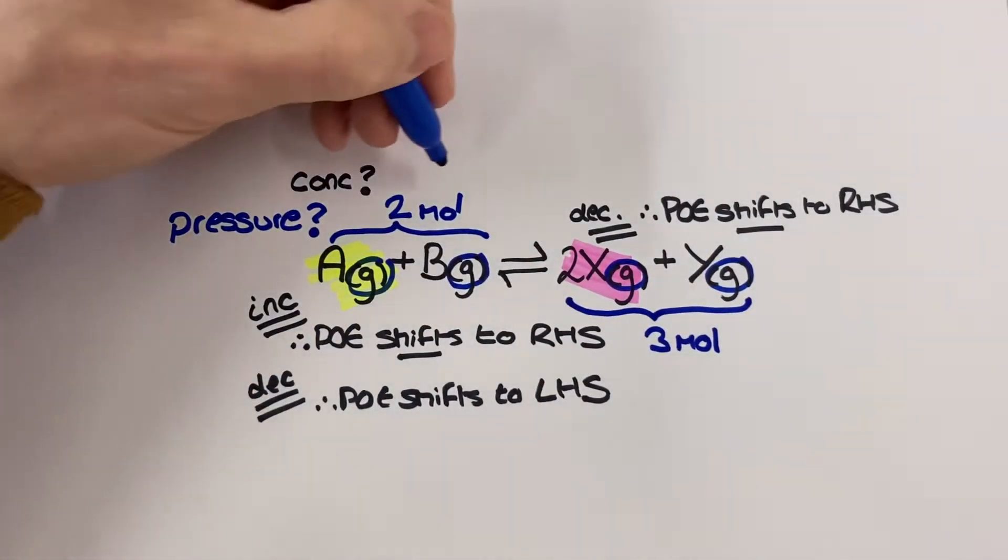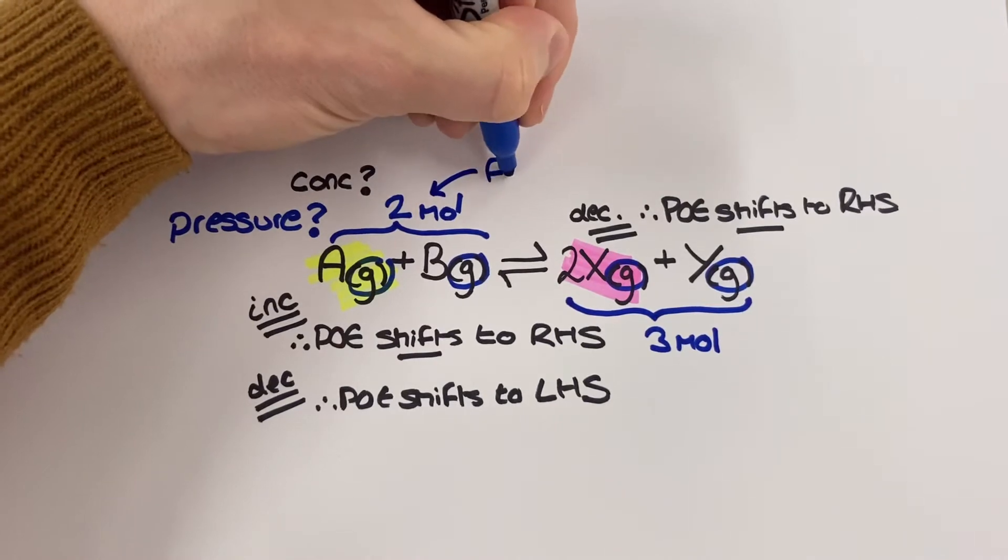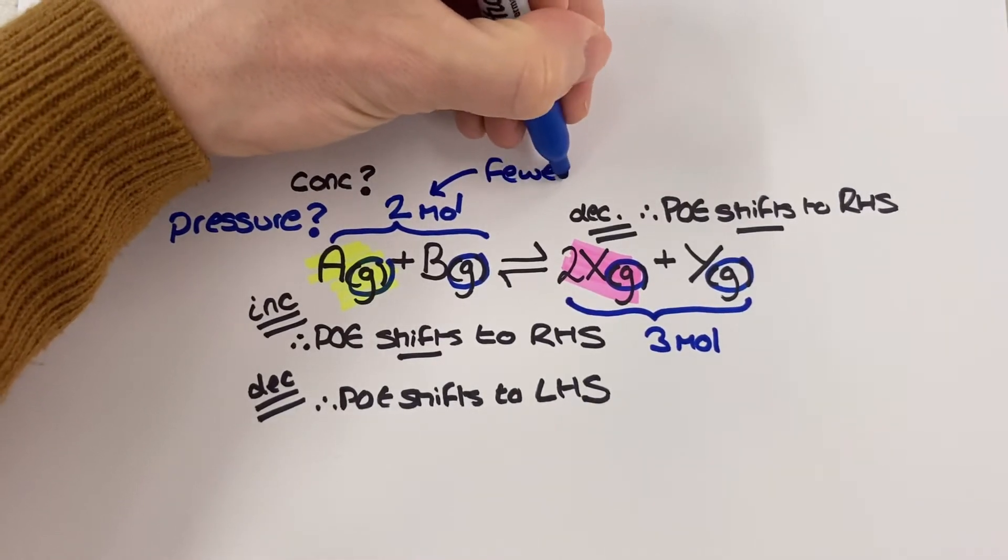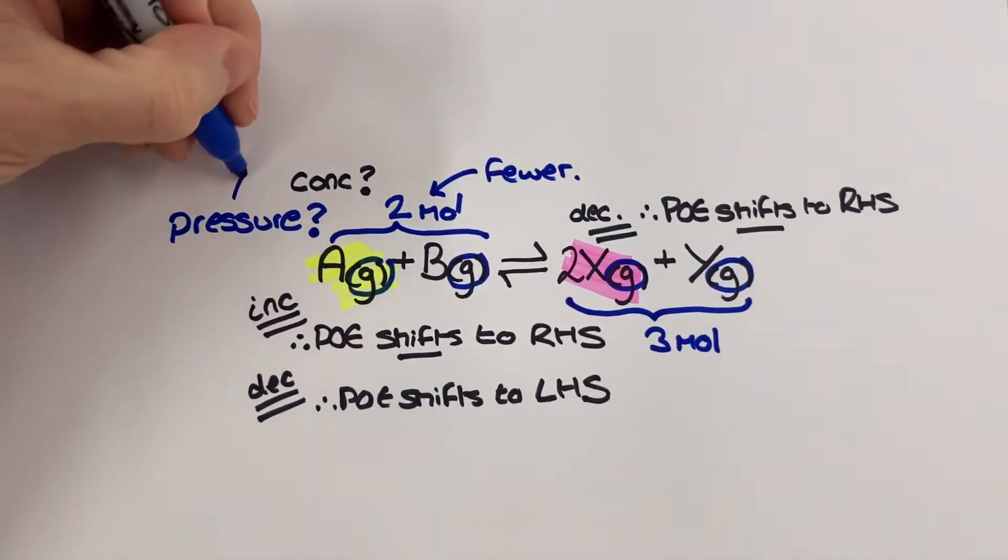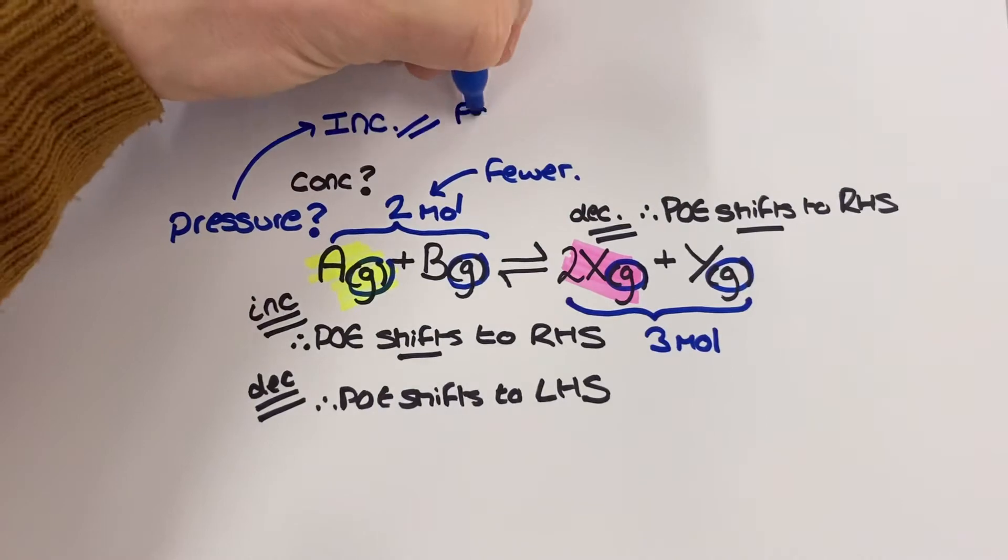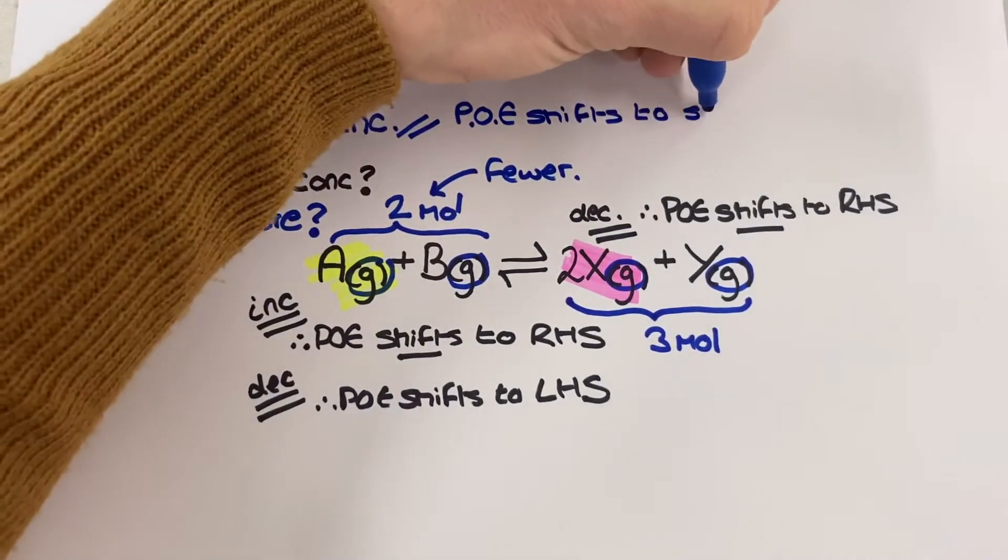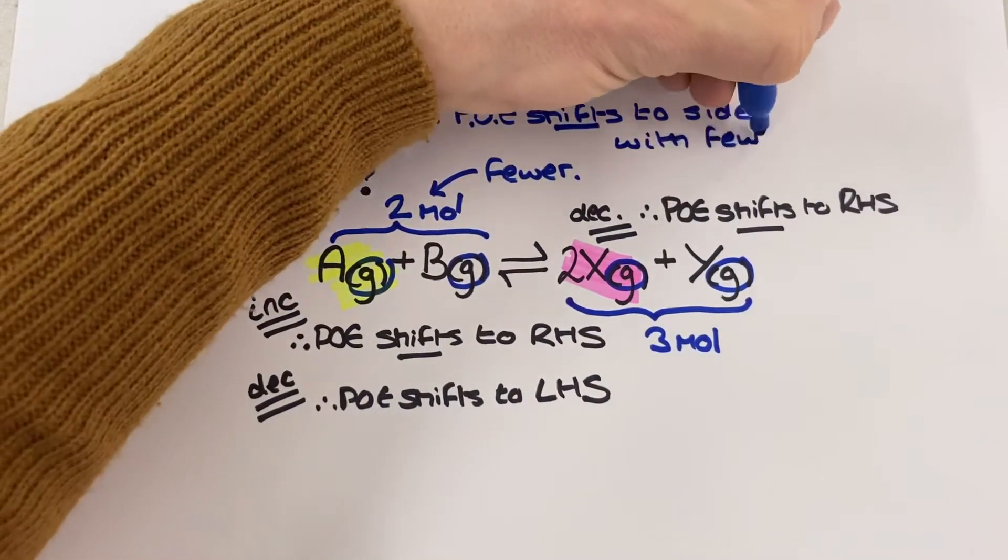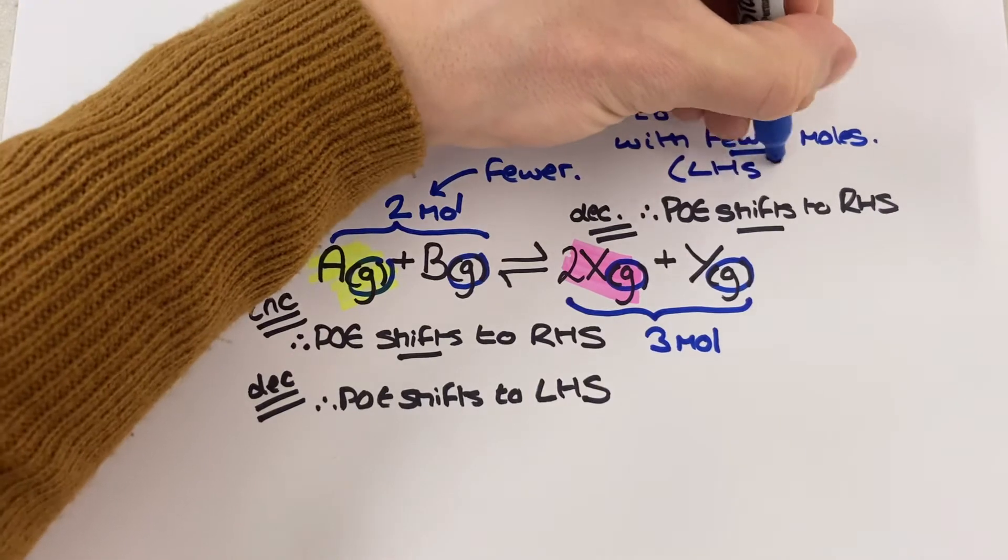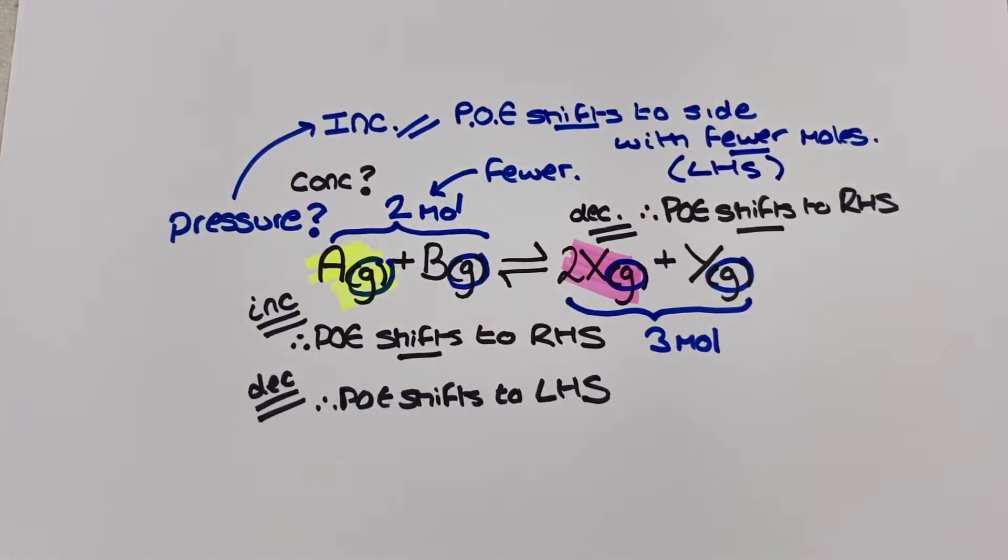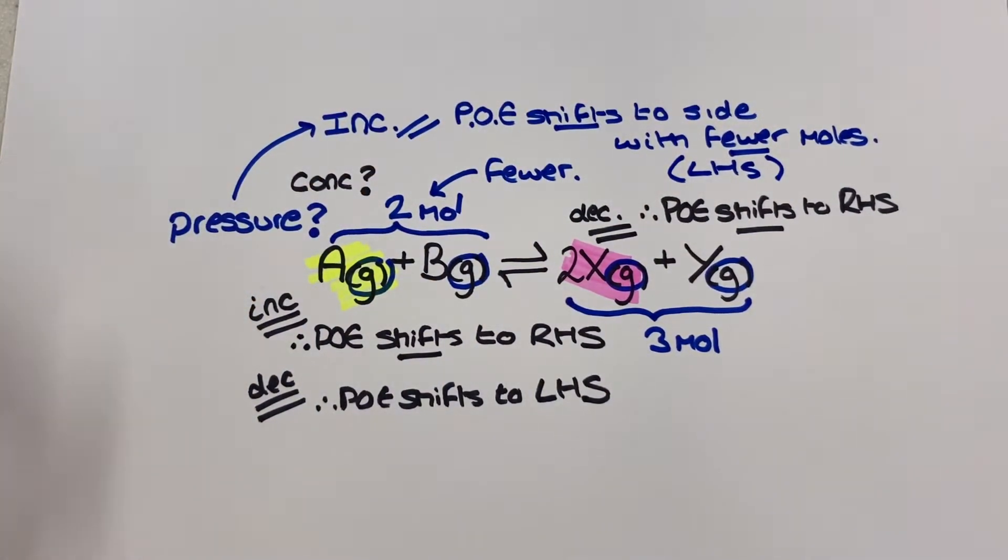Then the rule for changing the pressure and the shift in equilibrium is very simple. If we increase the pressure then the position of equilibrium will always shift to the side with fewer moles and if we decrease the pressure then the equilibrium position will shift to the side with more moles. Either way once again these shifts will minimize the effect of the change in pressure in accordance with Le Chatelier's principle.